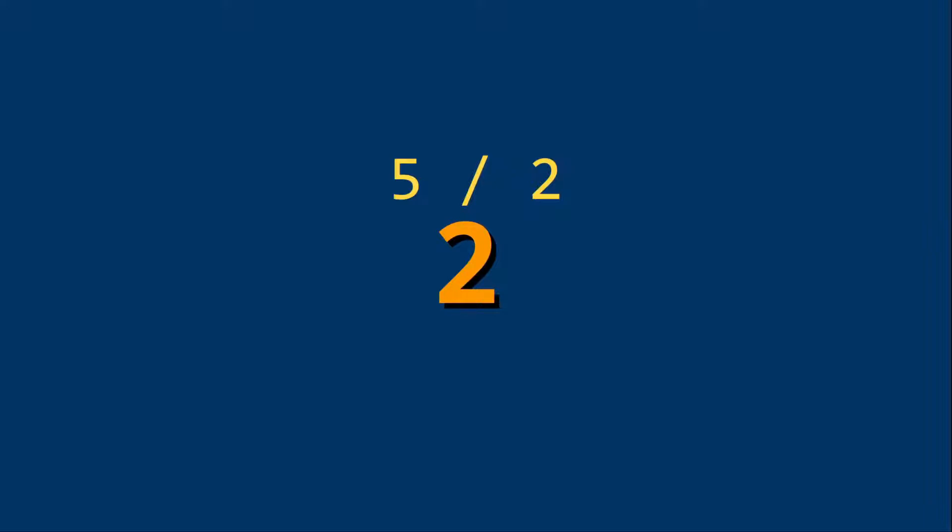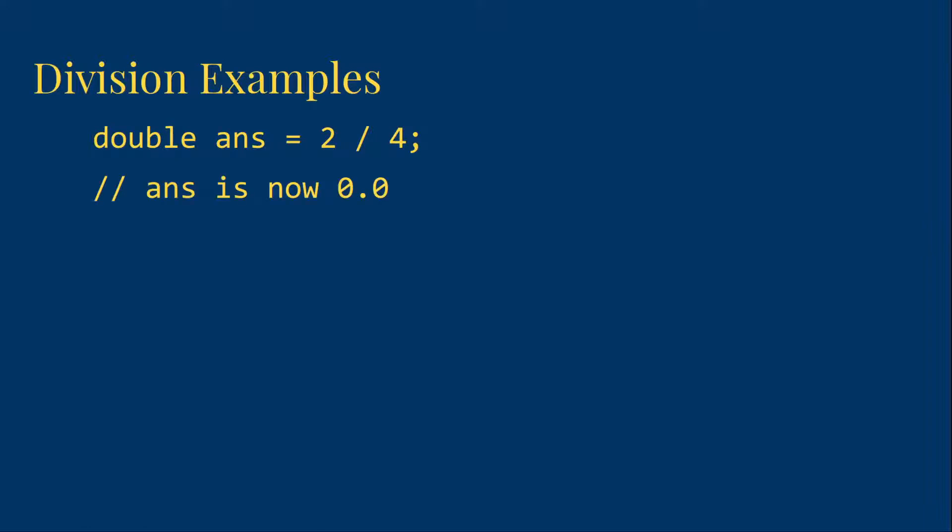Whenever we divide 2 integers, we have to remember this. So 2 divided by 4 is 0. However, that only applies to integers. 2.0 divided by 4 is 0.5.